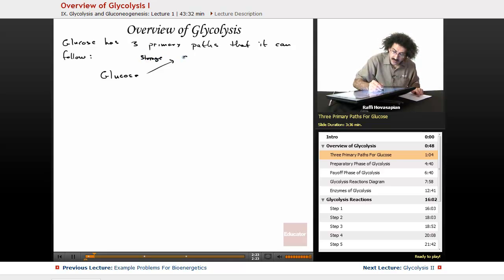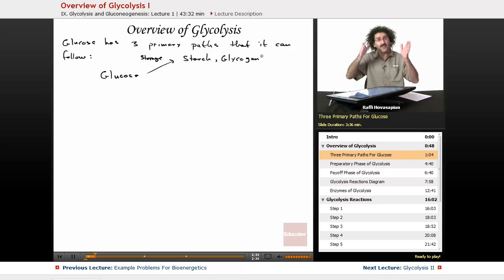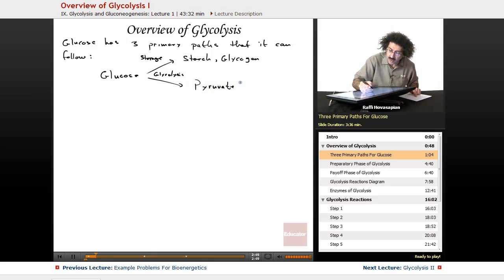Storage. So the body can take the glucose and create those polymers that we talked about when we talked about carbohydrates, the starch and the glycogen. So it can use it for storage purposes. Now, the other path that it can take is glycolysis, which we are going to talk about. When it runs through glycolysis, the products are pyruvate plus adenosine triphosphate.